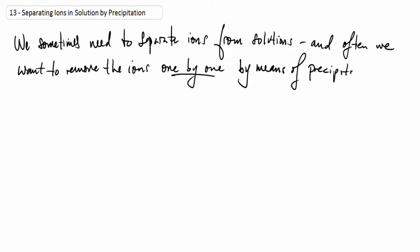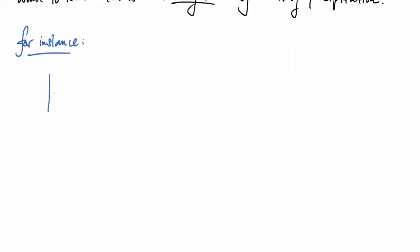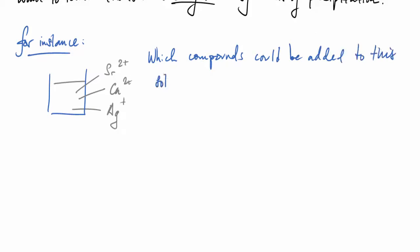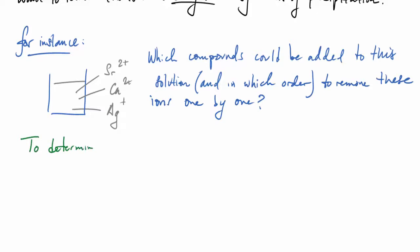Let's have a look at an example. Here we have a solution with some strontium ions, calcium ions, and silver ions present. The question we have is: which compounds could be added to this solution and in which order to remove these cations, these metal ions, one by one?